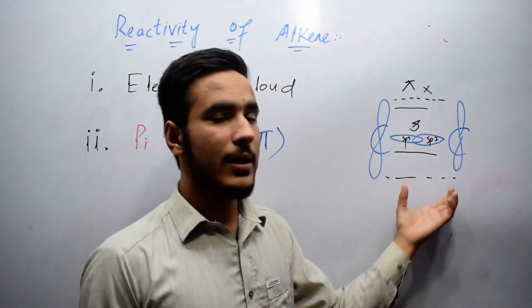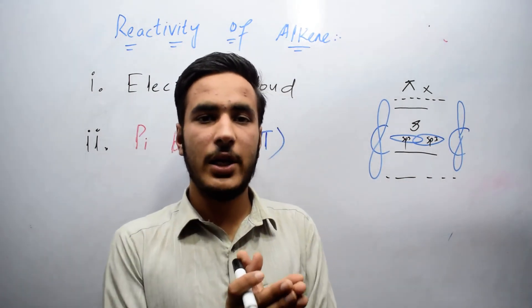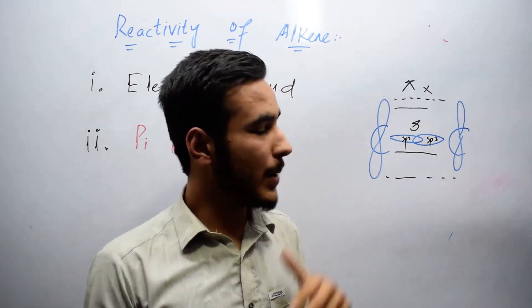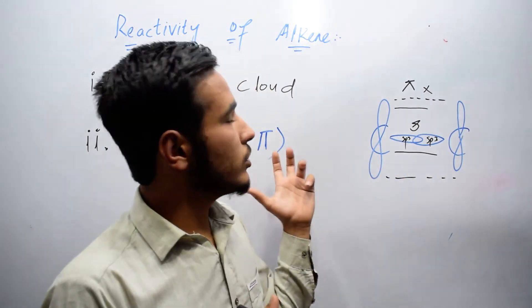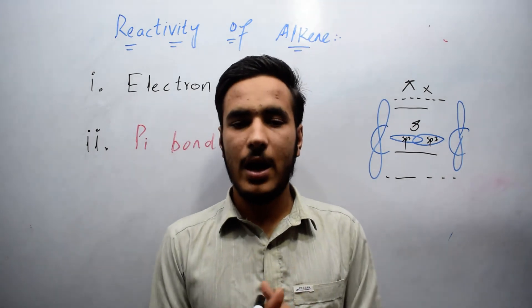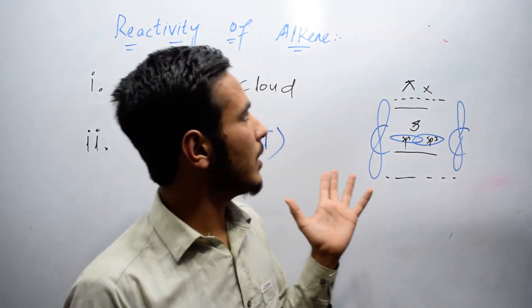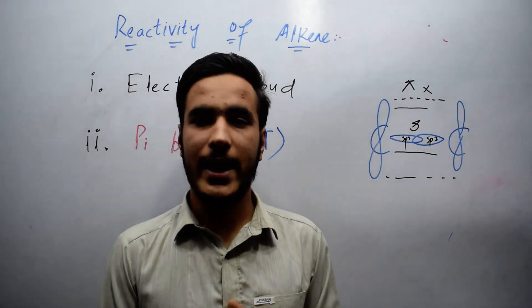While in alkene the location of electrons is not fixed, so electrophile can easily attack the pi bond. Due to these two reasons, alkenes are more reactive than alkanes. This was all about the reactivity of alkene. Thanks for watching.